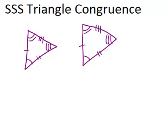So, if you want to show that two triangles are congruent, one way to do that is to verify that all of this information holds — that all three pairs of angles are congruent and all three pairs of sides. However, if you do want to show that two triangles are congruent, there are some shortcuts to do that, besides having to go through the work of showing all the angles and all the sides are congruent.